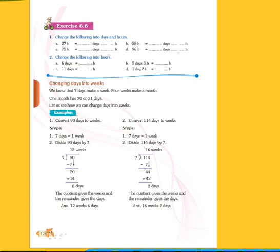Now you see how we can change days into weeks. We know that seven days make a week. Four weeks make a month. One month has either 30 or 31 days. Now we will see how to convert days into weeks.